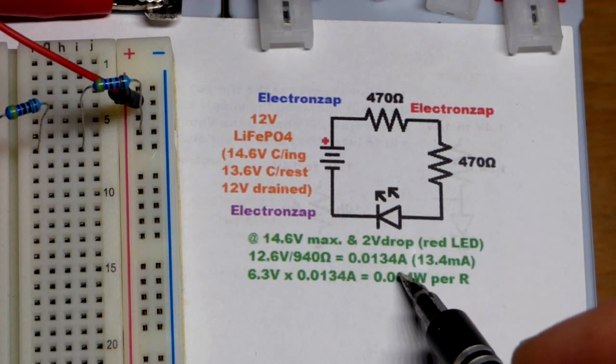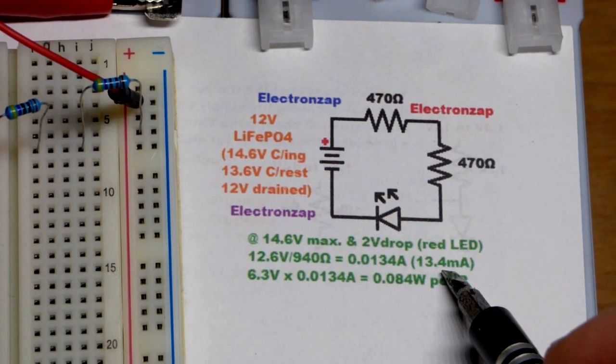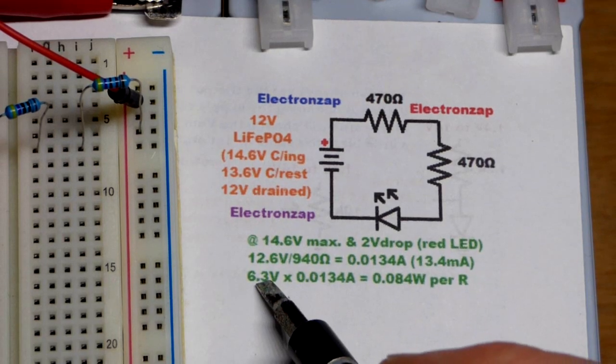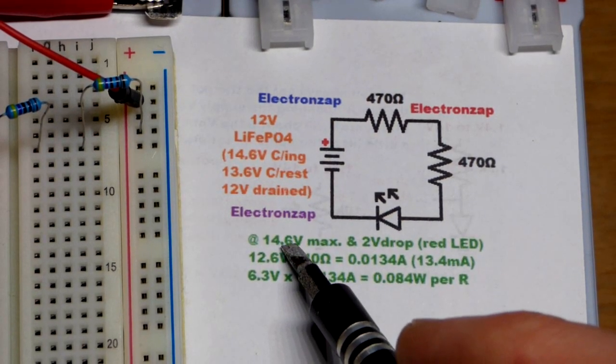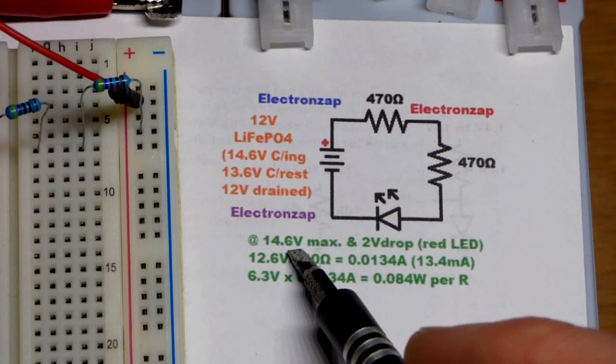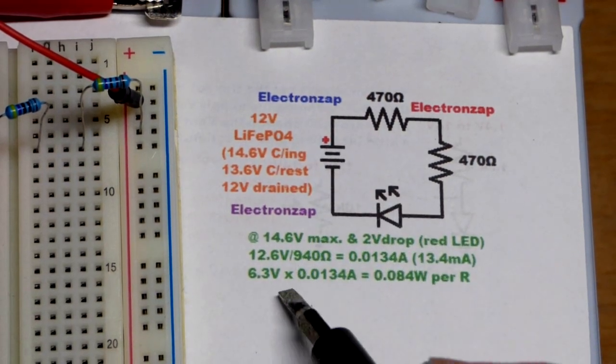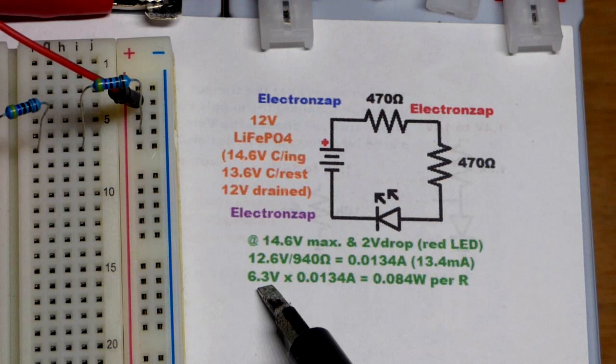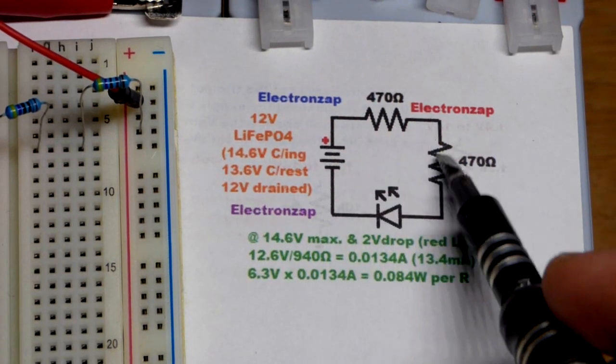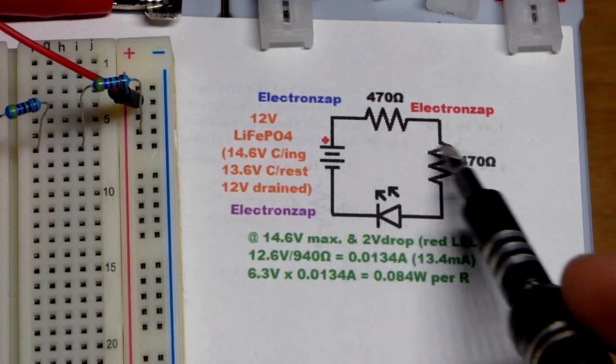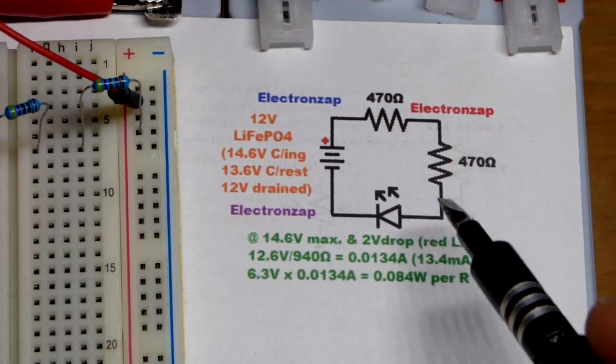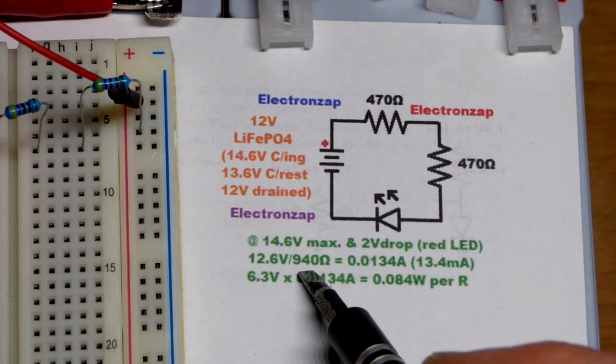This is kind of worst case scenario, so it'll be a little bit less than what you see here. So in any case, if we had a charger and it had the battery up to 14.6 volts well it's charging, then we would have 6.3 volts across each of these resistors. They will split up that 12.6 volts evenly because they're equal value resistors, basic voltage divider stuff.